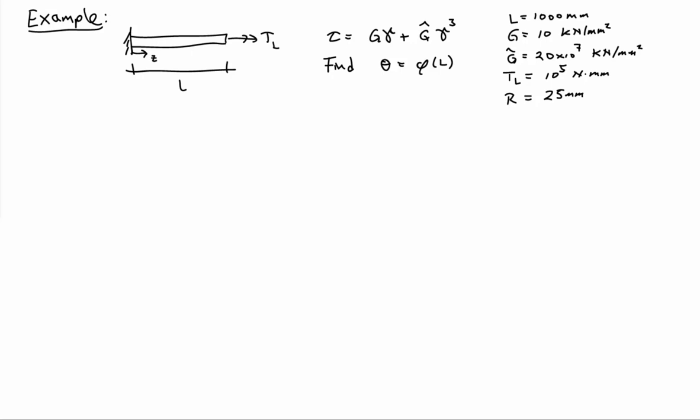In this example, I'd like to consider a round torsion bar of length L that's subjected to an end torque TL. And I'd like to find the rotation on the end of the bar. So I'd like to determine what phi of L is, which we'll just simply call theta.